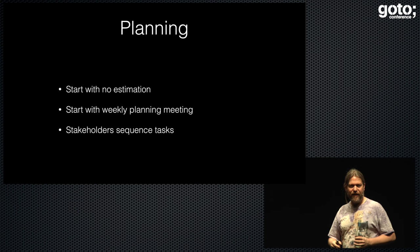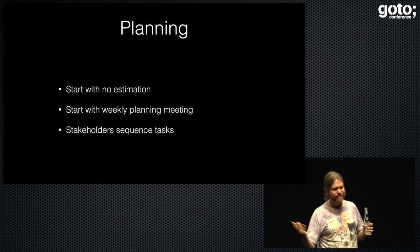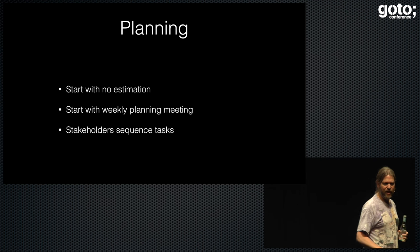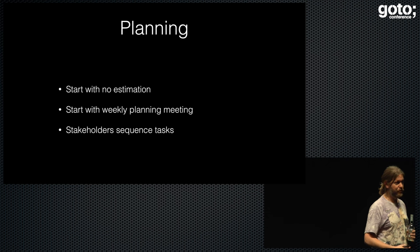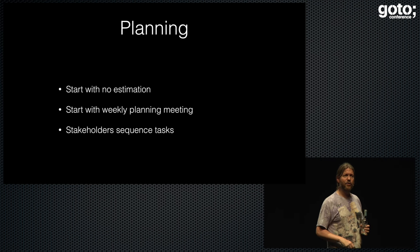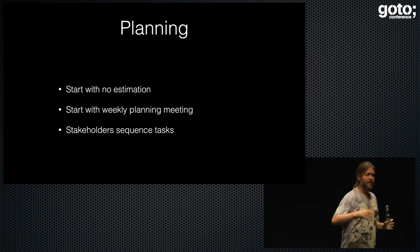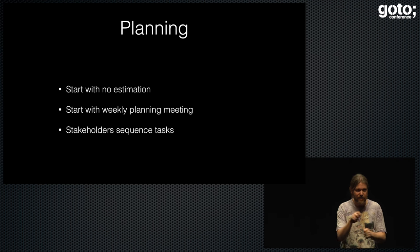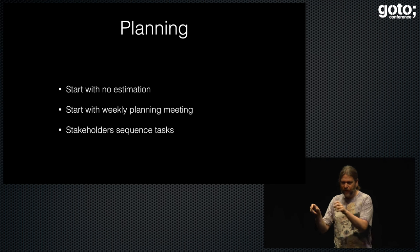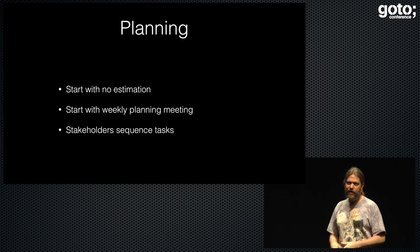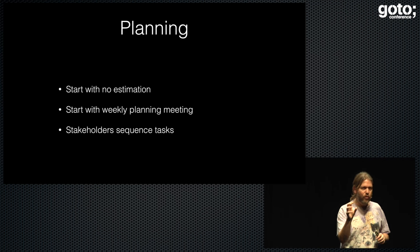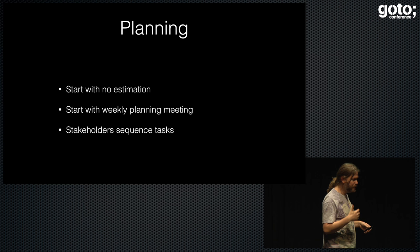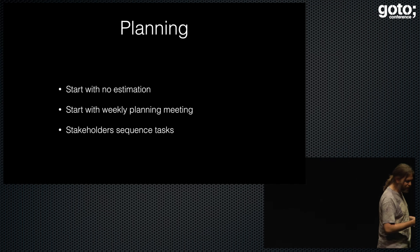When we started doing planning, we started with no estimation because there wasn't really a sense of why we needed estimates. We started with a weekly planning meeting because we were moving very quickly, and we had the stakeholders sequence the tasks. We'd use Trello, come into our weekly meeting, and ask the stakeholders: is this the next one you want us to do? Is this a higher priority? And I had this whole grand, wonderful way of doing it — take a card and ask: is it more important than this other one? We'd go through this big long process and get it prioritized, but we ran into a bunch of problems.